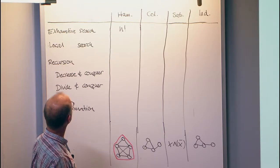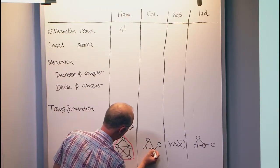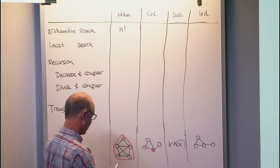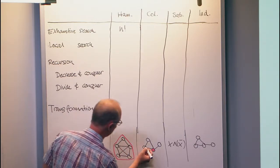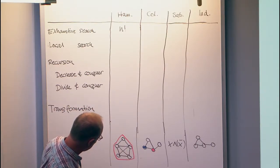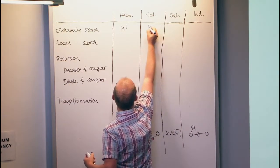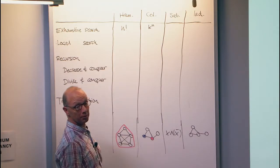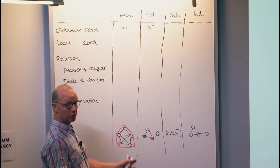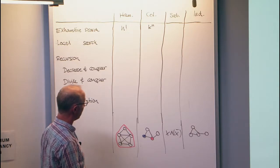Similarly, graph coloring — we can color this graph with two colors. That's not going to work, so I need at least a third color. So I can color this graph with three colors: blue, white, and red. And obviously I can do that in time k to the n, where k denotes the number of colors. So I just check all mappings from the vertices to the set 1, 2, 3, up to k, and there are k to the n such mappings. One of them will be a valid coloring, if that exists.